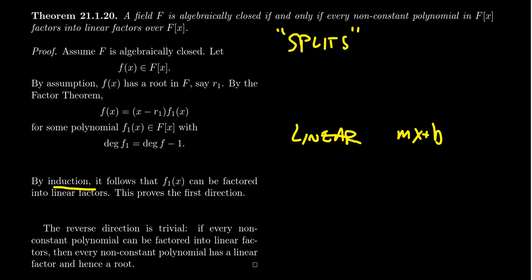For the inductive step: if every polynomial of degree less than n splits, then take a polynomial of degree n. By assumption, since F is algebraically closed, it has a linear factor. It then has a remaining polynomial of degree n − 1, and by the inductive hypothesis every polynomial of degree n − 1 splits into linear factors. You join those linear factors to (x − R₁), and you have a linear factorization of f. This completes the forward direction using induction and the factor theorem.